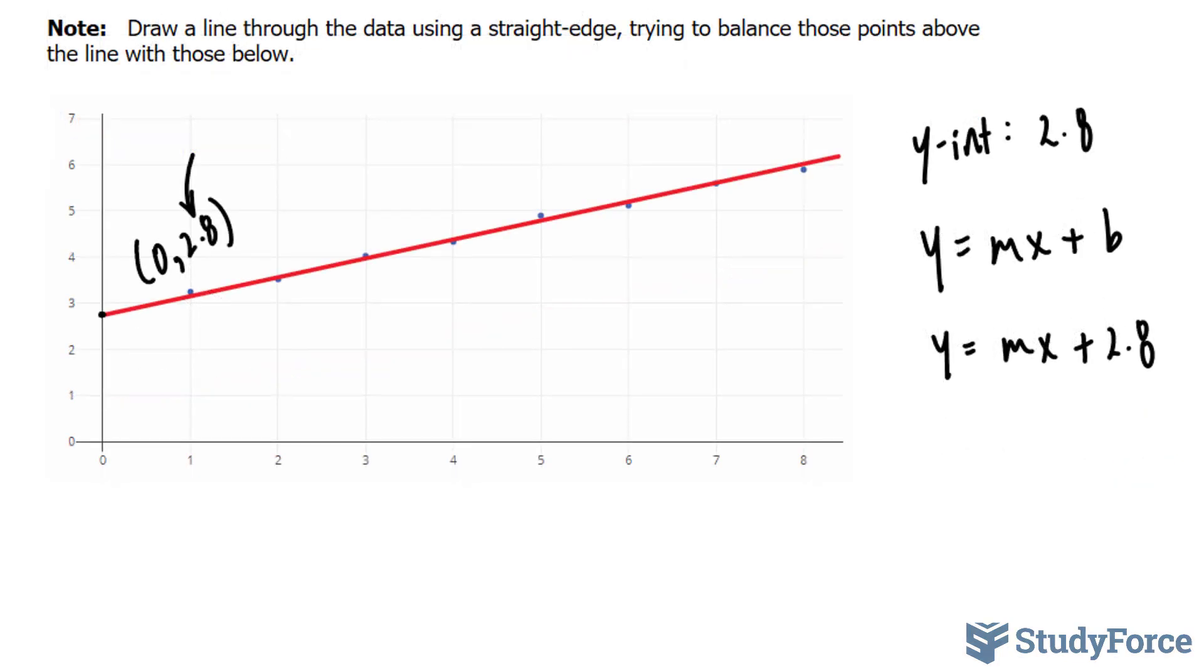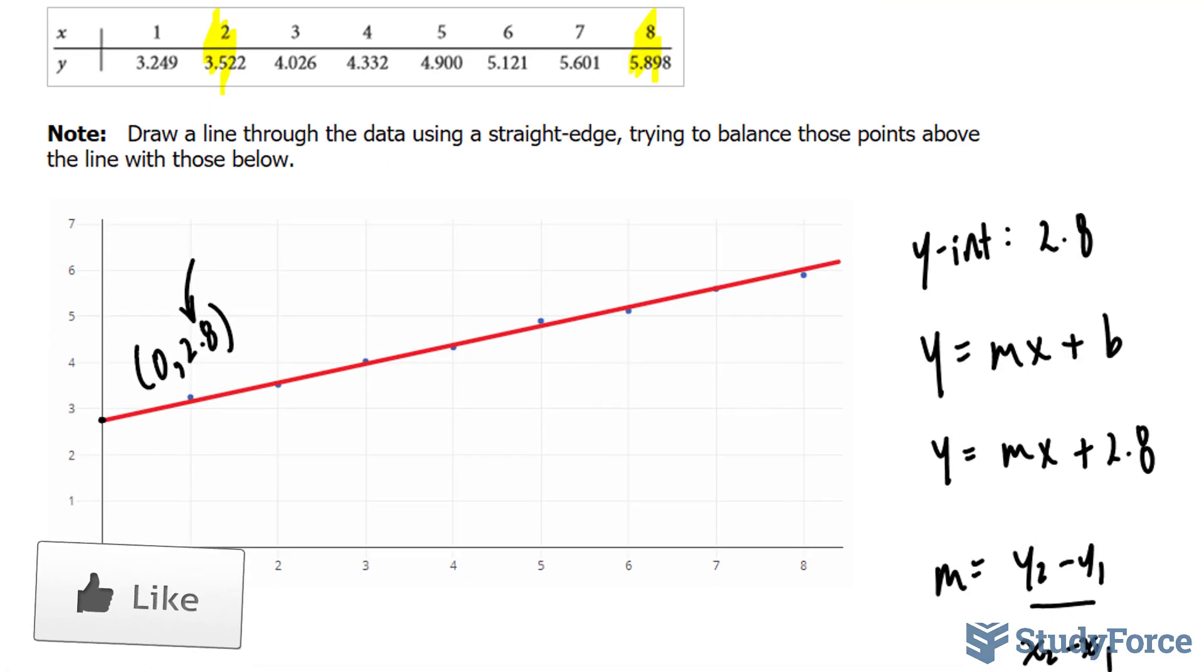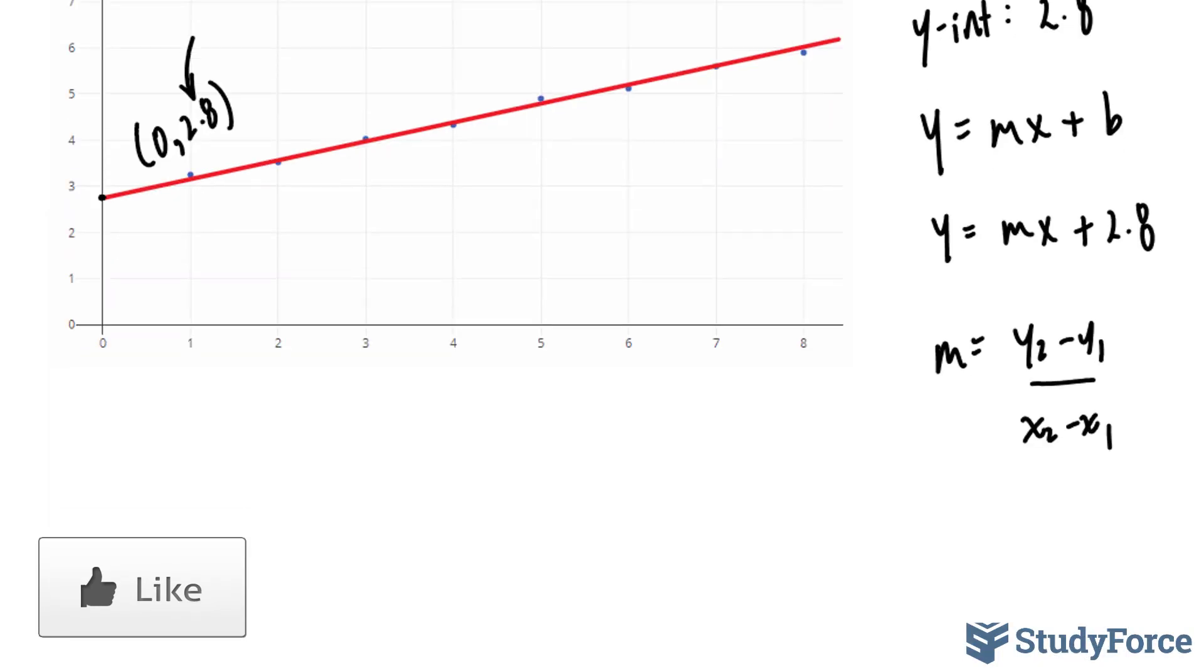To find the slope, you can do it mathematically using the formula m equals y2 minus y1 over x2 minus x1. This would involve picking two points in your table of values, let's say this point and this point, substituting the x and y-coordinates of each of these points into this formula and finding an m. However, since we have to...